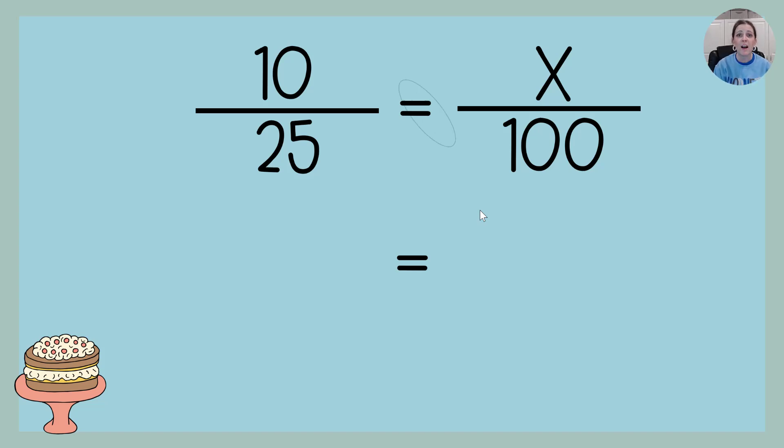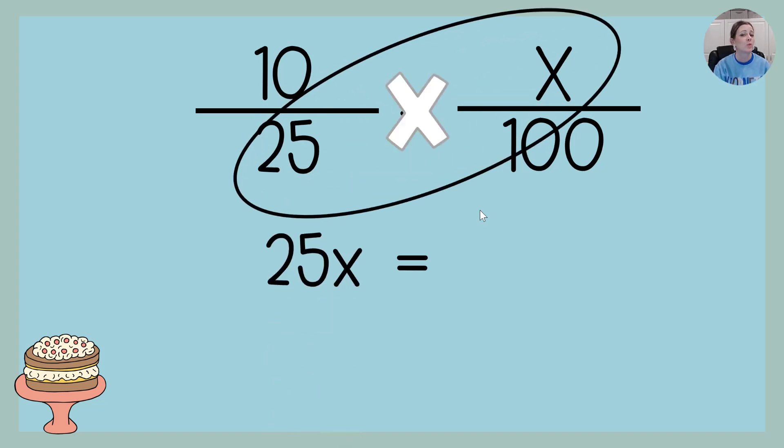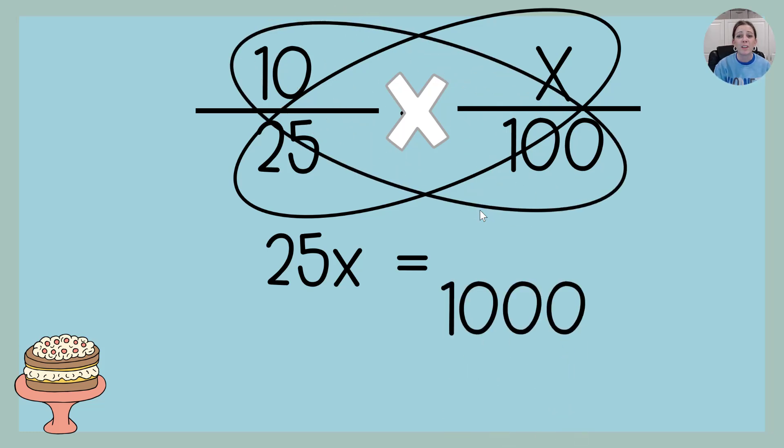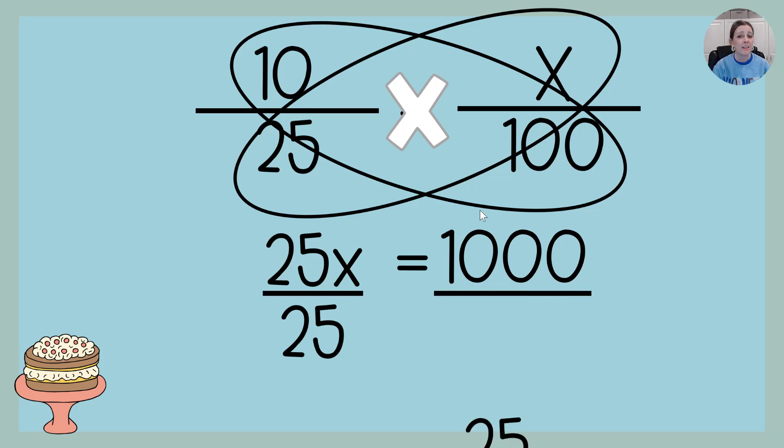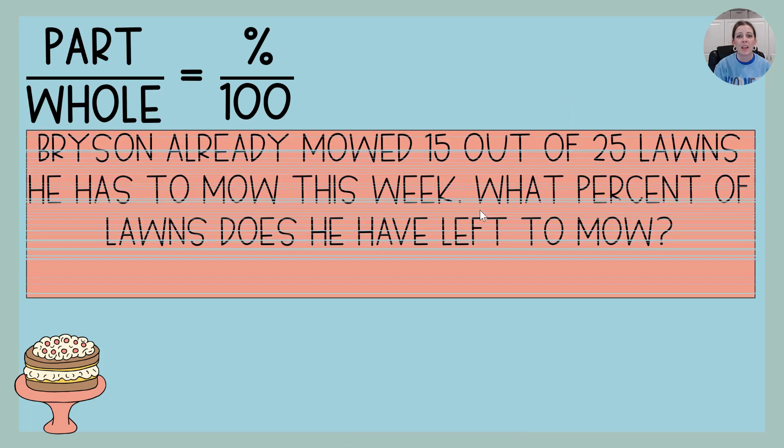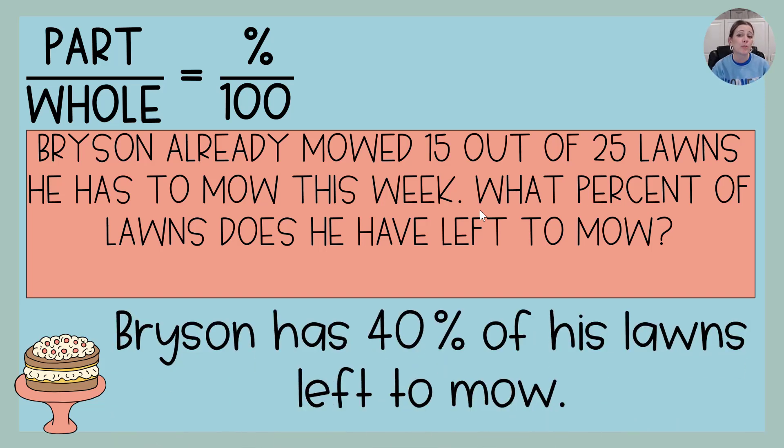And now we're ready for cross-multiplication. 25 times X is 25X, 10 times 100 is 1,000. We're going to divide both sides by 25, and X is 40. So in this case, Bryson has 40% of his lawns left to mow.